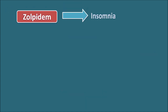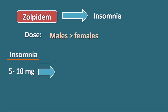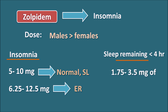Zolpidem is used in the treatment of insomnia, and the dose is generally higher in males compared to females. For insomnia, 5 to 10 mg of the immediate release or sublingual tablet can be used, or 6.25 to 12.5 mg of the extended release tablet. When Zolpidem is used to induce sleep when less than 4 hours of sleep remain, only 1.75 to 3.5 mg of the sublingual tablet is given, as it produces a short-duration effect.